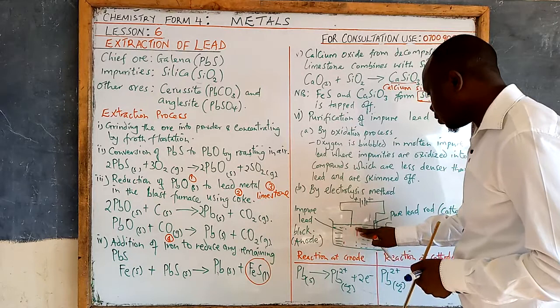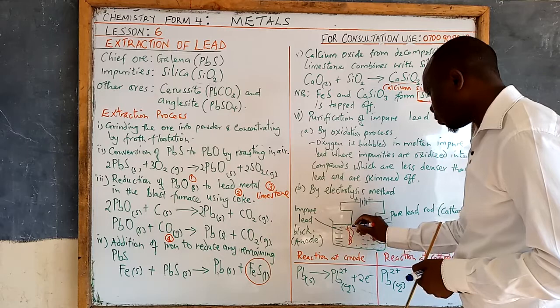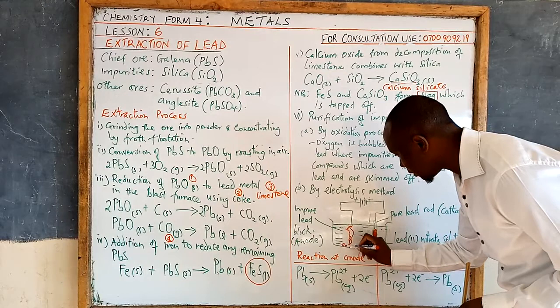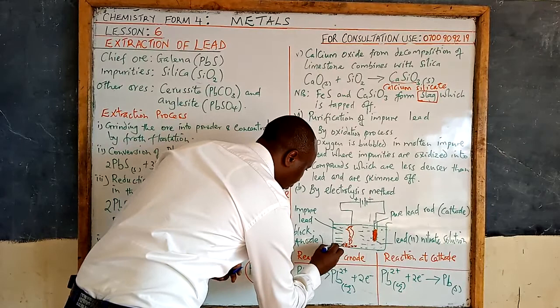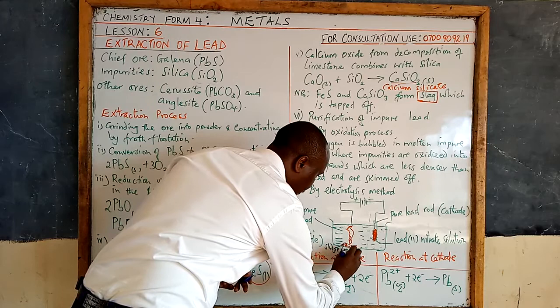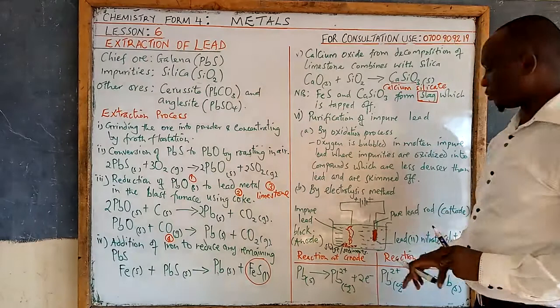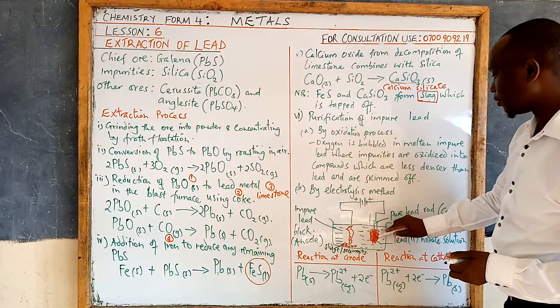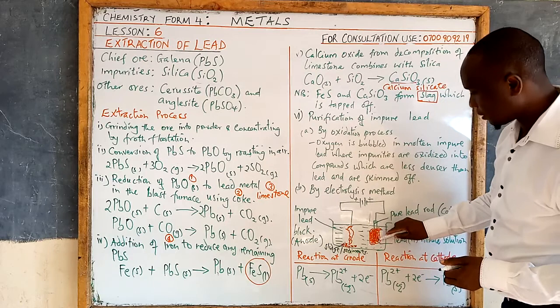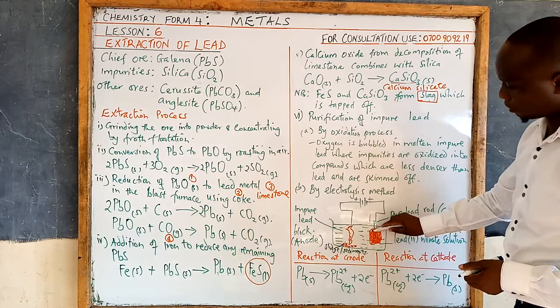With time, the anode lead block reduces in size as it goes into solution. Anything that is not lead — called sludge or sediments — will fall off the anode and will not dissolve into the solution. At the cathode there is a continuous addition of more and more lead, and that lead is very pure. By the end of the electrolysis process, more lead has been added at the cathode while the anode has decreased in size.